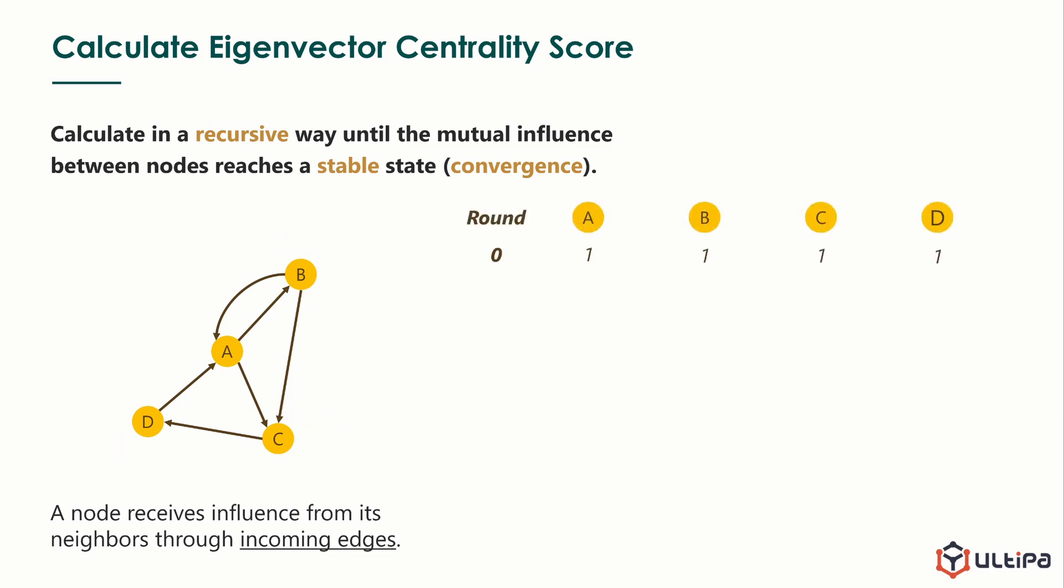Initially, we assume that all nodes have an equal centrality score as 1. In the first round, update the score of each node by the sum of scores of its in-neighbors. For example, for node A, its new score equals to the sum of scores of node B and node D and it's 2. In the following rounds, update the scores with the same rule.